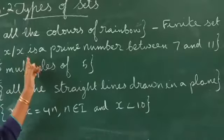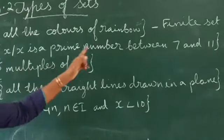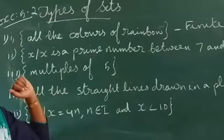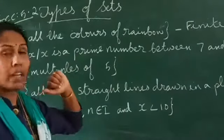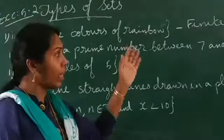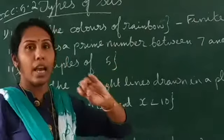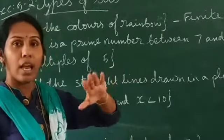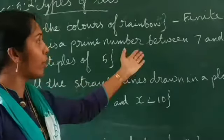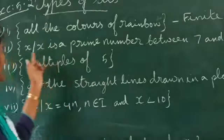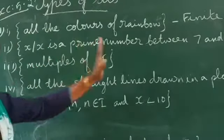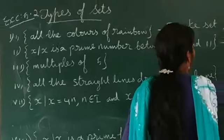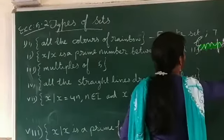Second one: prime numbers between 7 and 11. Between 7 and 11, the numbers are 8, 9, and 10. And 8, 9, and 10 are not prime numbers. Therefore, there is no element in this set. Therefore, it is an empty set.